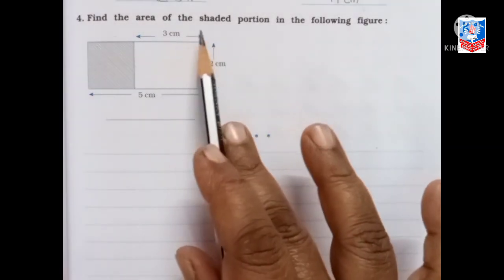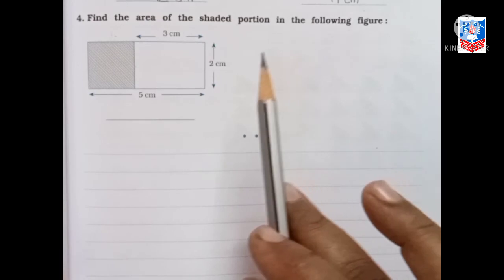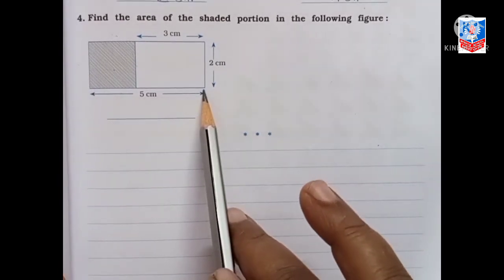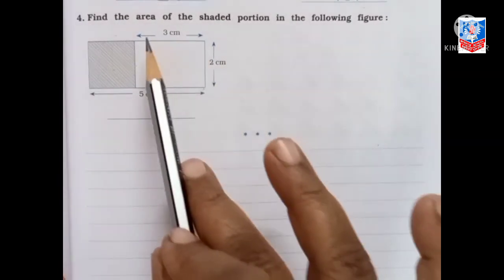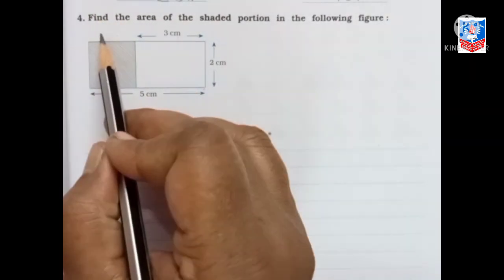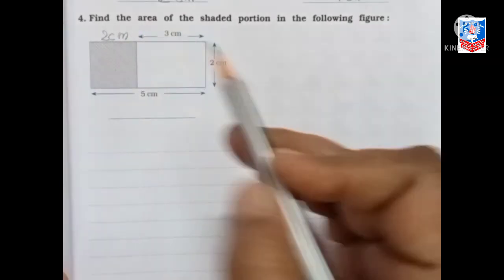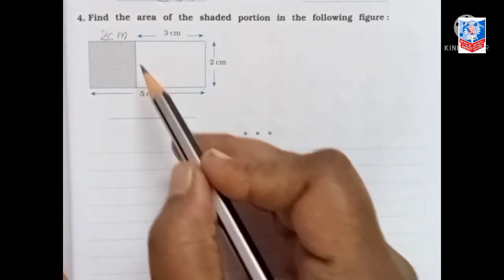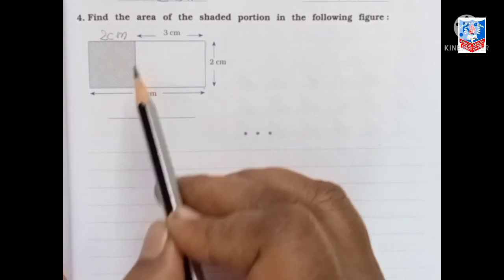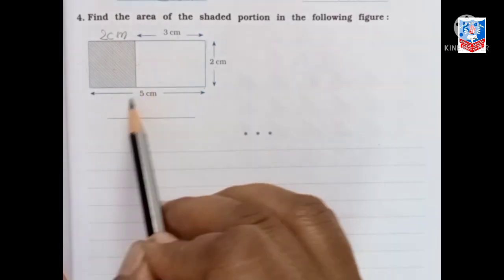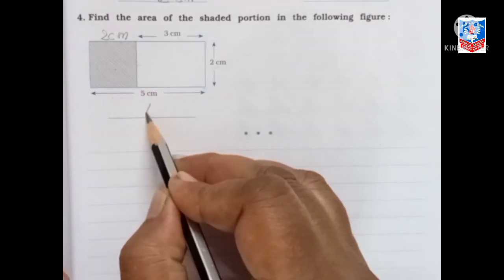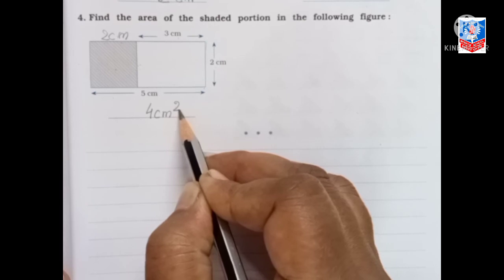Next question: find the area of the shaded portion in the following figure. The total length is 5 centimeter and the unshaded portion is 3 centimeter, so the shaded portion length is 5 minus 3, which is 2 centimeter. The breadth of the shaded portion is also 2 centimeter. It is a square shape, so area equals side into side, that is 2 into 2, which is 4 centimeter square.